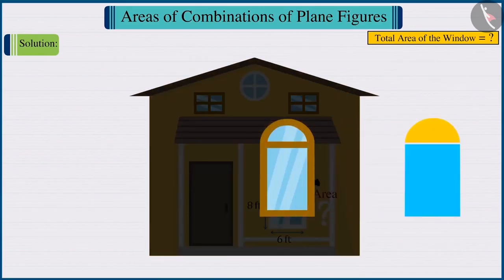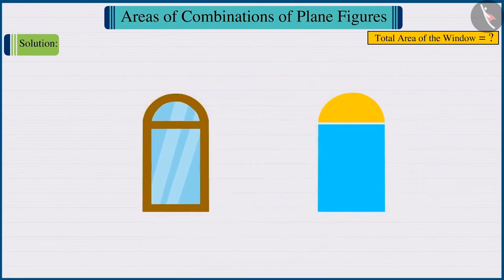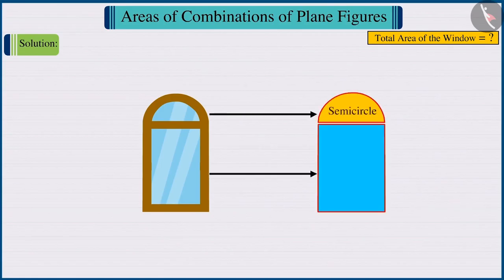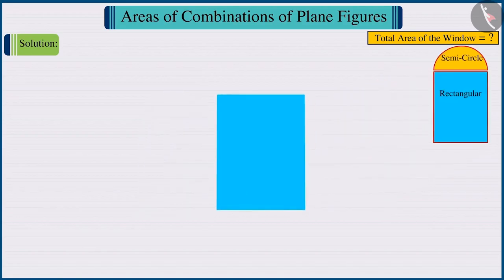First, let's make a rough figure of the window which looks like this. Looking at the window carefully, we can say that the upper portion of the window is semi-circular and the lower portion is rectangular. Where, the length of the rectangular portion is 8 feet and the width is 6 feet.